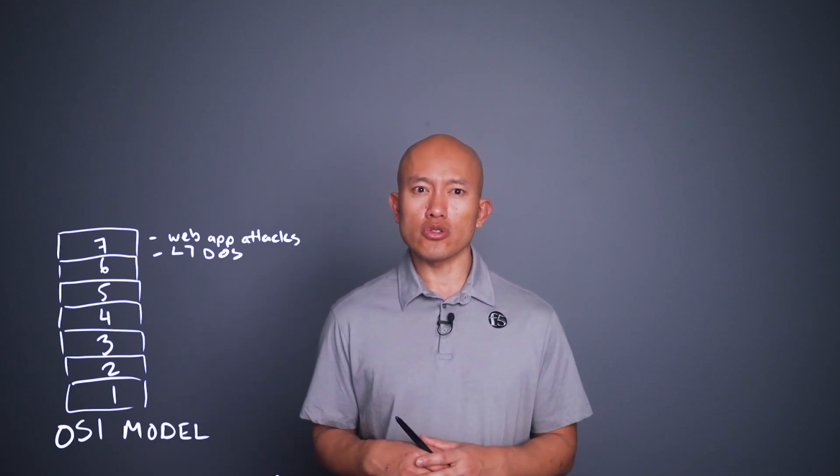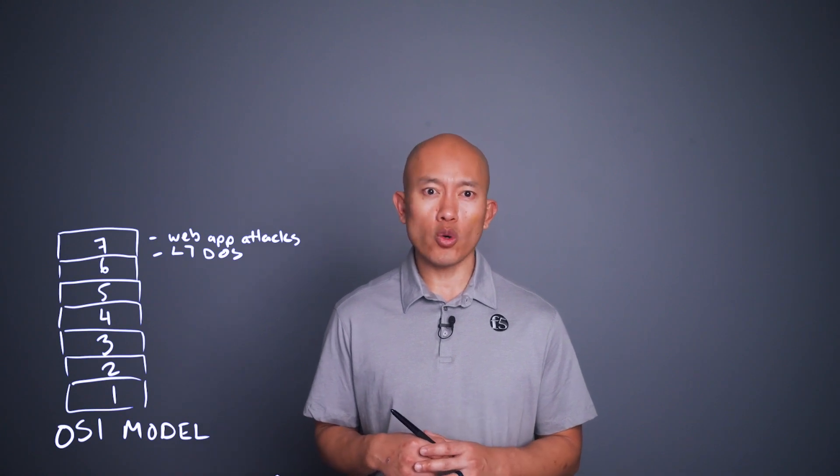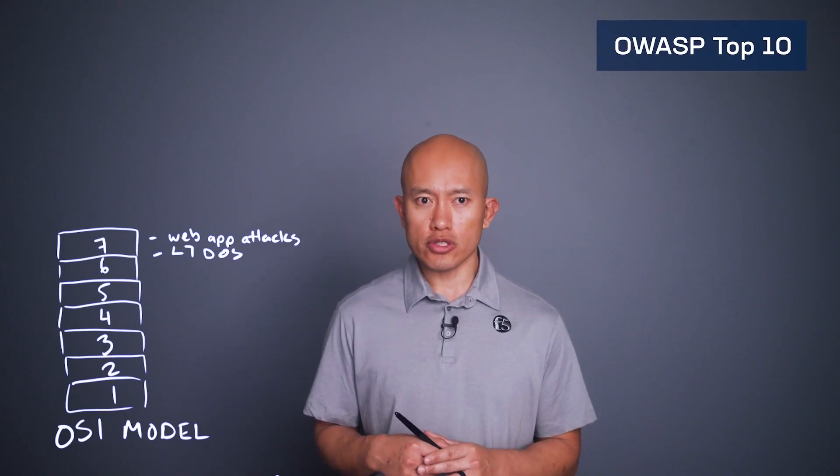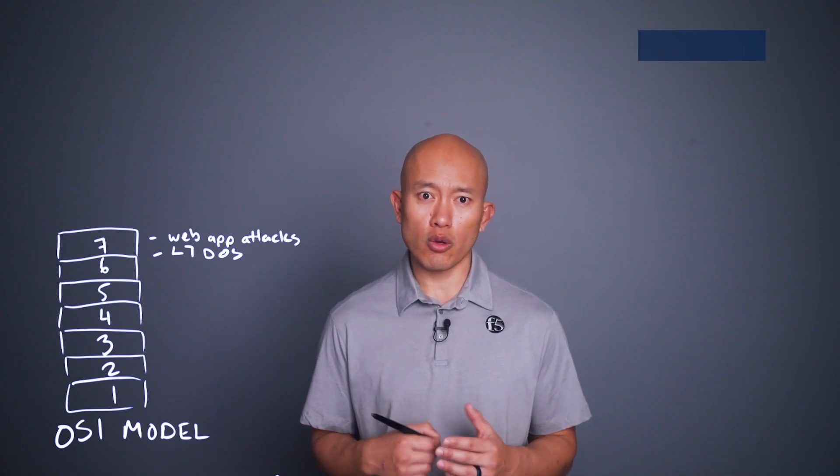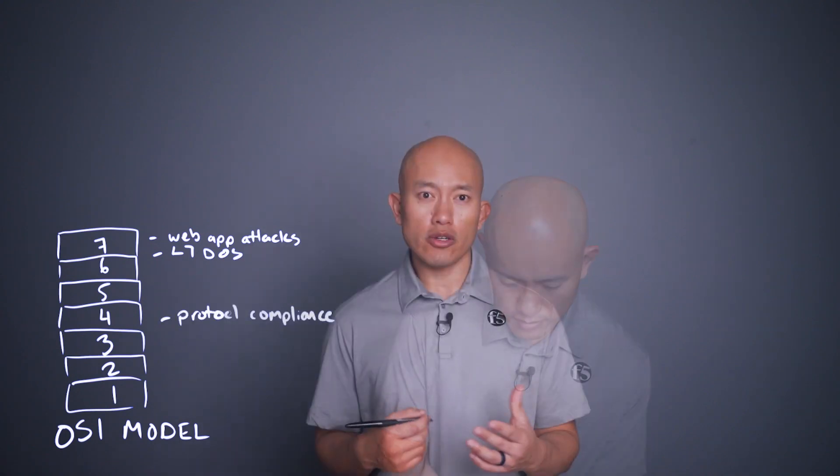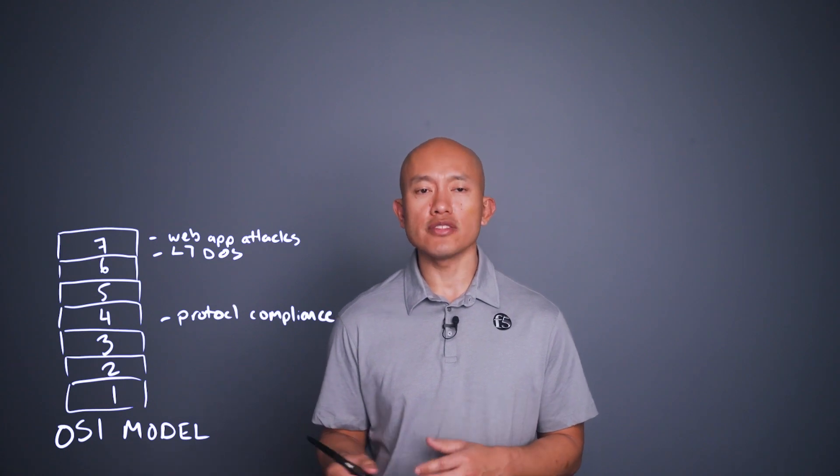A great place to start learning about application layer attacks is by looking through the OWASP top 10. The OWASP project points out the top web application risks that the industry should be aware of. A WAF can also provide layer four protections and enforce compliancy with protocols.